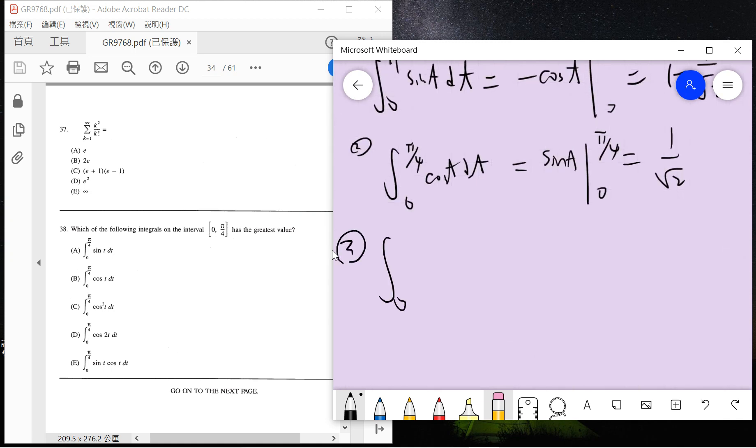The third one from zero to pi over four. I use the double angle formula. This is t over two plus sine 2t divided by four. So it's pi over four plus pi over eight plus sine pi over two which is one minus zero.